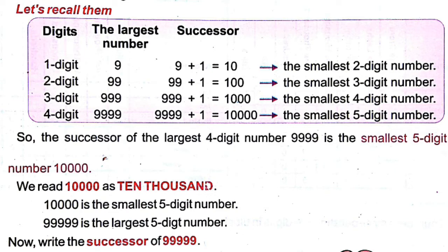The largest one-digit number is nine. The successor of a number means the number plus one. So the successor of the largest one-digit number is nine plus one, that is ten. The successor of the largest one-digit number is the smallest two-digit number, because the answer is ten.